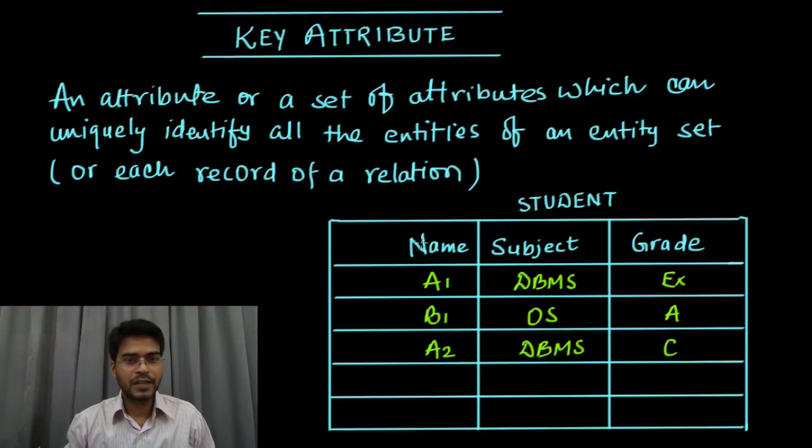Key attribute is an attribute or collection of attributes which can uniquely identify each record in a relation or a table. You can write down the formal definition: an attribute or a set of attributes which can uniquely identify all the entities of an entity set or each record of a relation or table. This is what we call it as key attribute.